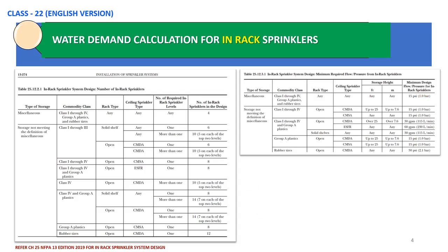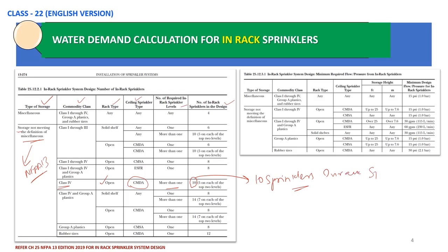The type of storage is storage not meeting the definition of miscellaneous — you can check NFPA 13 definitions for that. In our case, the commodity class is Class 4 and the rack type is open type racks. Ceiling CMDA sprinklers are already installed per project requirements. The number of required in-rack sprinkler levels is more than one, and the number of rack sprinklers in the design — this is very important — will be 10.